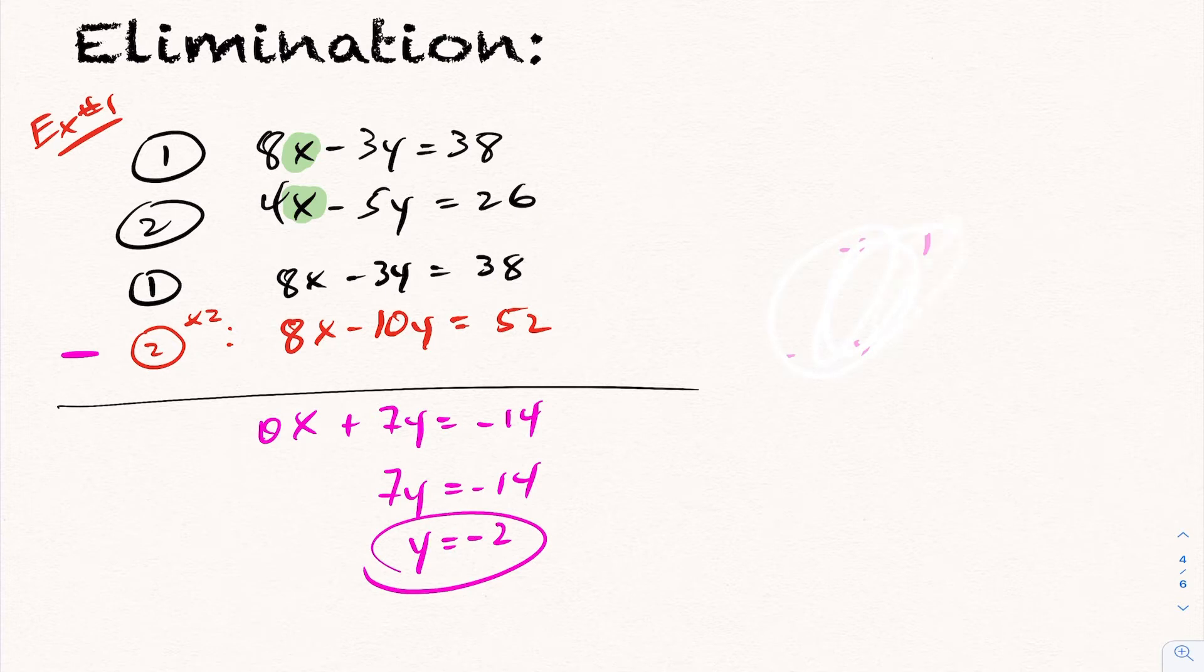Divide across by 7 and you get y equals negative 2. So this is the first step to elimination, it's the most important step. We found our y value. Now that you've found your y value, you can sub that into either equation and get your x.